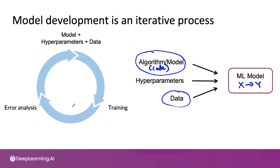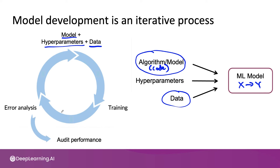One of the things that will help you improve performance is each time through the loop, being able to make good choices about how to modify the data, the model, or the hyperparameters. After you've done this enough times and achieved a good model, one last step that's often useful is to carry out a richer error analysis and have your system go through a final audit to make sure it is working before you push it to a production deployment.